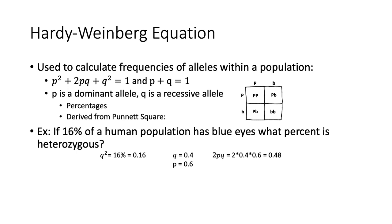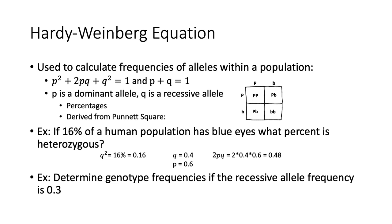Let's do another example. Determine the genotype frequencies if the recessive allele frequency is 0.3 for a certain trait. Well, that means q is 0.3, and p is 1 minus q, or 0.7. So the homozygous dominant allele frequency, or p squared, is 0.7 squared, or 0.49, which is 49%. The homozygous recessive allele frequency is q squared, or 0.3 squared, which is 0.09, or 9%. Finally, the heterozygous frequency is 2 times p times q, or 2 times 0.3 times 0.7, which is 0.42, or 42%.